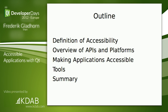Today I would first like to introduce the topic: what is accessibility? Then I would like to give an overview of what we have on the different platforms — Windows, Linux, Mac, and nowadays also the mobile platforms, Android and iOS. Then I'd like to mention a few things you can do to make an application accessible and what tools will help, and then summarize.